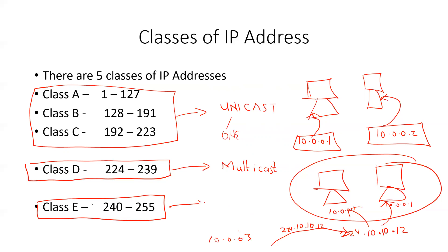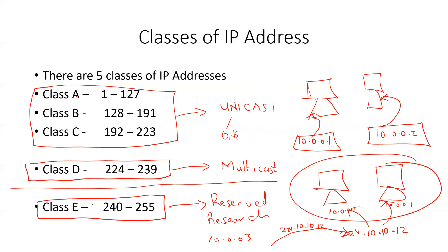The last class is what we refer to as the reserved range. This particular range is reserved for research purposes, so it's beyond the scope of this class. All we're going to be looking at will be Class A, B, and C, which are assigned to machines when we design our networks, and also some multicast addresses for other technologies and purposes in our lectures.